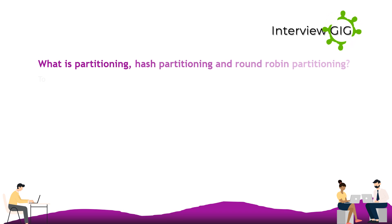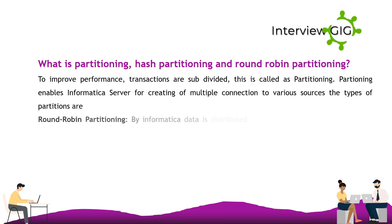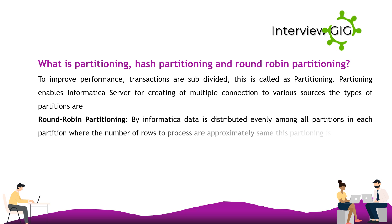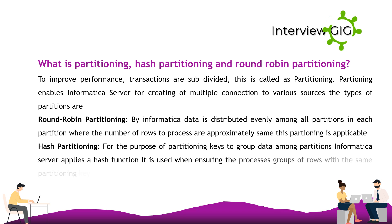Partitioning is the subdivision of transactions to improve performance. It enables the Informatica server to create multiple connections to various sources. Round robin partitioning distributes data evenly among all partitions so that each partition has approximately the same number of rows to process. Hash partitioning applies a hash function to partition keys to group data among partitions, ensuring that rows with the same partitioning key are processed in the same partition.